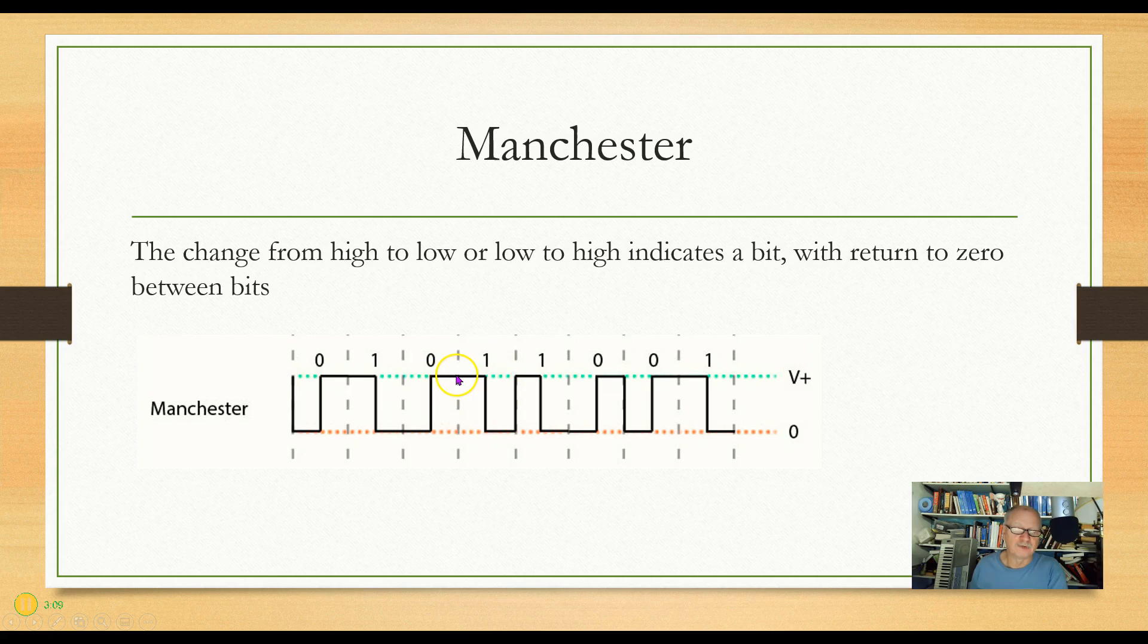And you may notice in here that we have to return. So here's two 1s. I have a high voltage, I return to 0, and then I have a high voltage, and I return to 0 again. So no matter which way we go, we return to 0 every time, and this helps get by both problems.